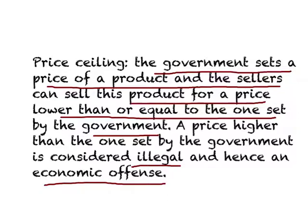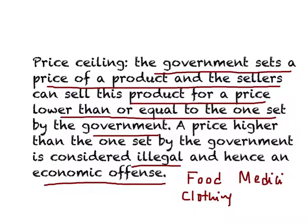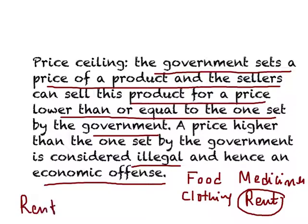If sellers do decide to sell at a price higher than the one set by the government, it is considered illegal — an economic offense. Some examples where you may find government stepping in are food, basic clothing, basic medicine, or rent. In the U.S., the best example of price ceiling is rent control. In certain urban cities, the government steps in and believes living in an apartment is unaffordable to a class of people, so it sets rent control, which is essentially a price ceiling. The owners of an apartment can charge a rent lower than or equal to the one set by the government, but never a rent higher than that.